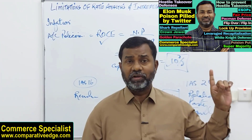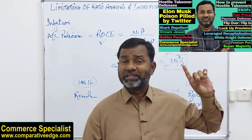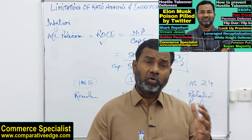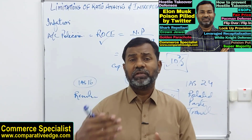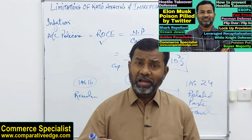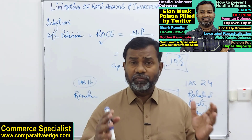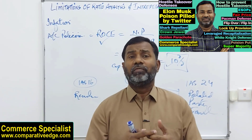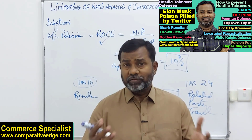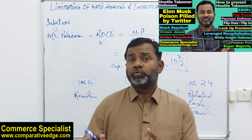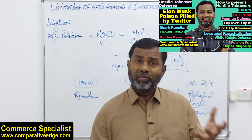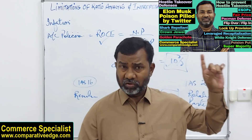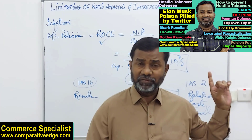On hostile takeovers, I have created a video discussing all the different types of hostile takeover and the defenses a company's management may use to counter them. I also discuss the Twitter example — when Elon Musk was buying Twitter, they used the strategy known as 'poison pill.' Twitter's management used the poison pill defense to try to deter Elon Musk from completing the acquisition.